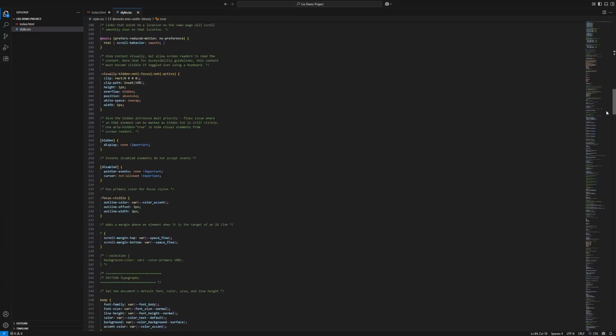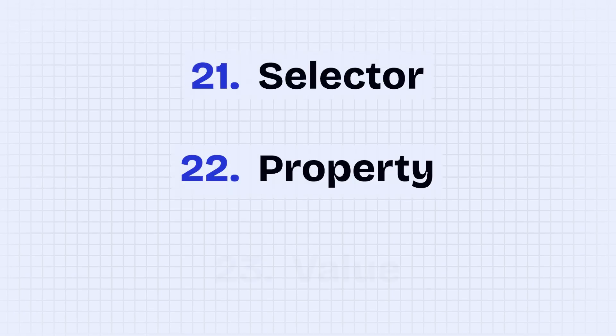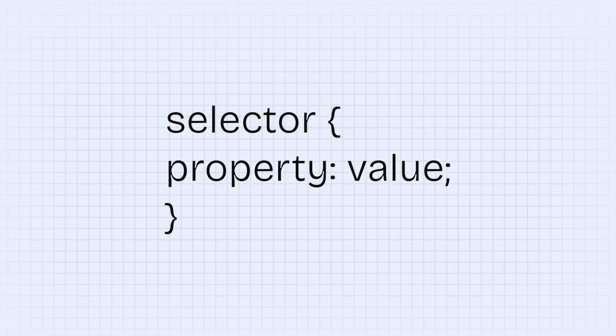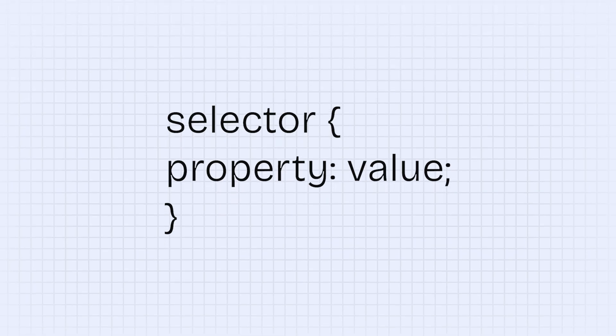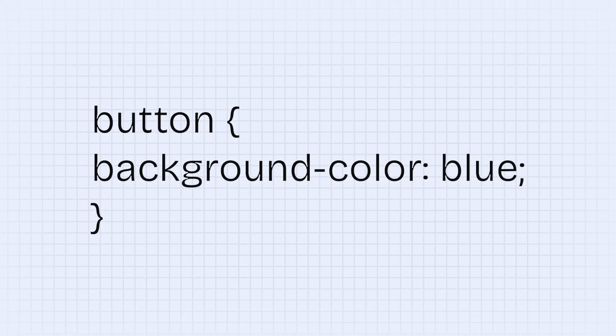This is how web developers get such granular control over their websites — they use CSS, written in something called a style sheet. The style sheet controls all the styles on your website: font size, padding, color, and every single style of every single element. To define a style within the style sheet, you need three things: a selector, a property, and a value. The selector is the element or group of elements you'd like to select, the property is the part of the element you'd like to change, and the value is what you'd like to change it to. For example, to make all buttons blue: button, background-color, blue.